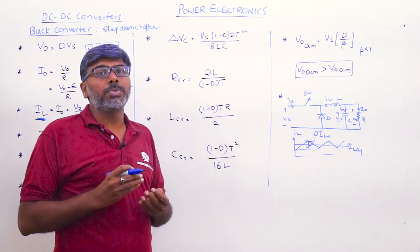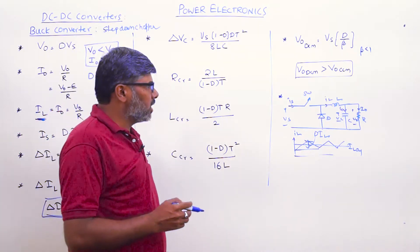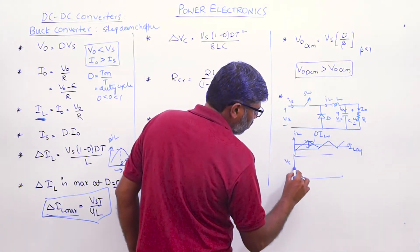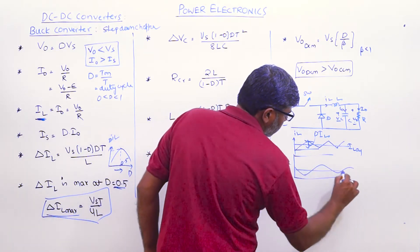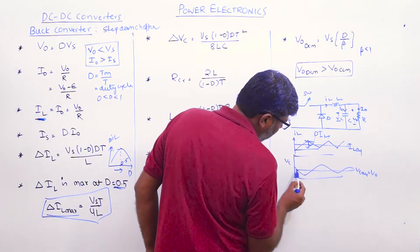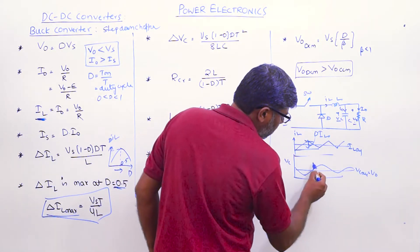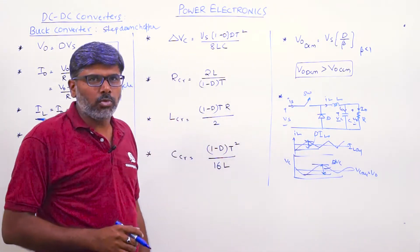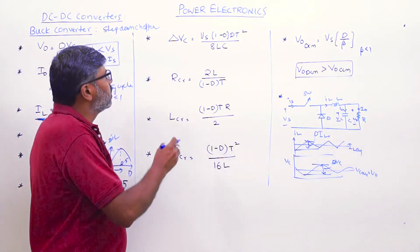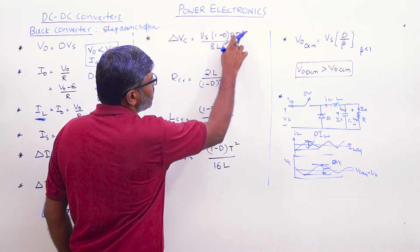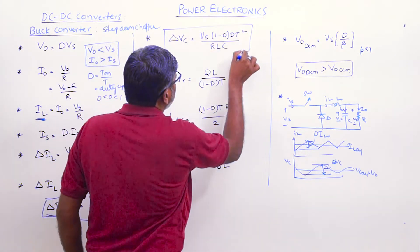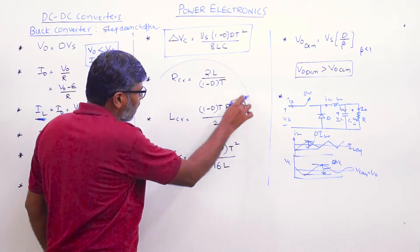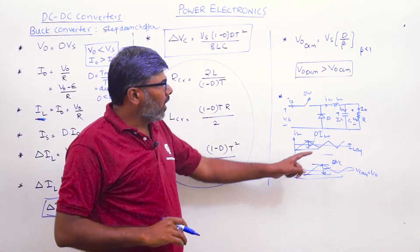The capacitor voltage VC equals the load voltage V0. Like the inductor current, the capacitor voltage also varies — increasing and decreasing around the average VC = V0. The peak-to-peak ripple in capacitor voltage (which is the ripple in output voltage) is: ΔVc = Vs × (1 − D) × D × T² / (8LC).